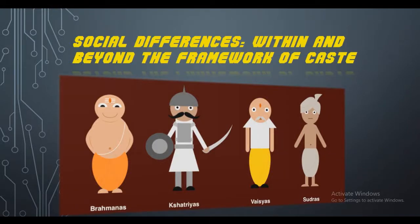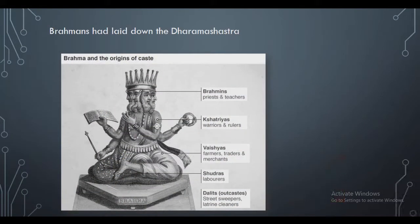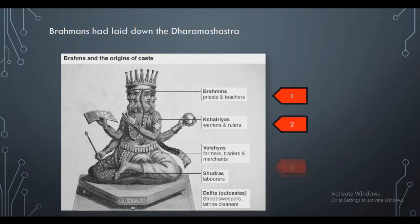Good afternoon. In the previous video we discussed how Indian society was divided into different caste systems. In this video we are going to learn how each caste system had a different job to do. As previously mentioned, the Brahmins made a law book called the Dharmashastra, and in this book they mentioned that Indian society was divided into four different caste systems, originating from the god Brahma. The first is the Brahmins, the second is the Kshatriyas, the third is the Vaishyas, and the fourth is the Shudras.